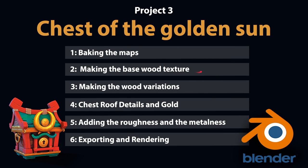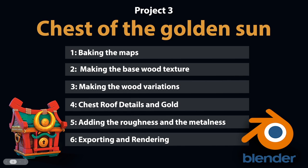In Project 3 we have a chest, and the workflow is very similar to the last project. We are going to do the map baking, start making the wood base with some color variations, work on the details for the roof and the metals, and then work on the roughness and the metalness. Here we are going to explore how to create metallic reflections, because the way we work with roughness is a little different in metallic materials. Finally, we have the presentation in Marmoset.